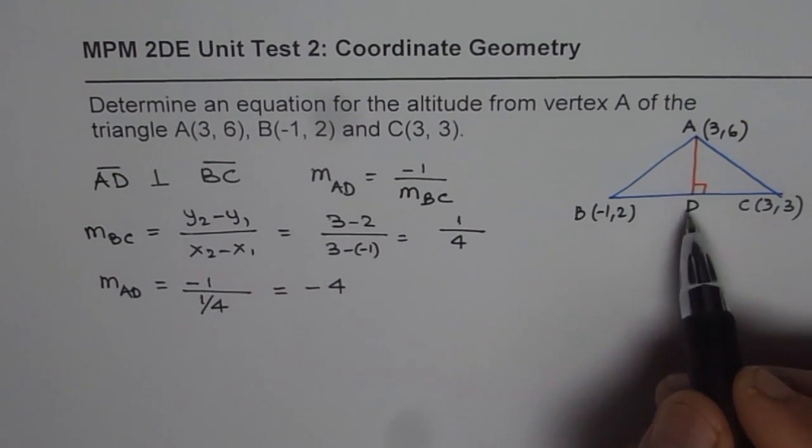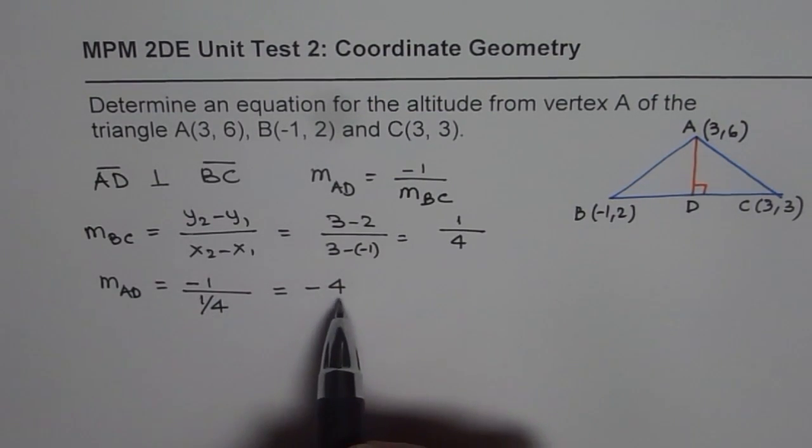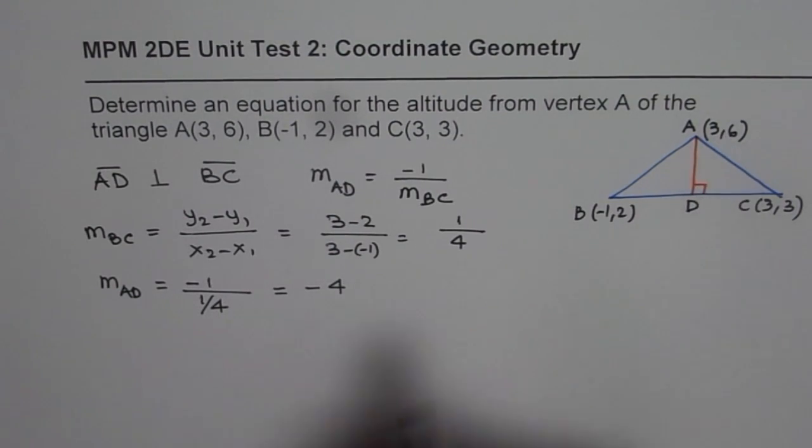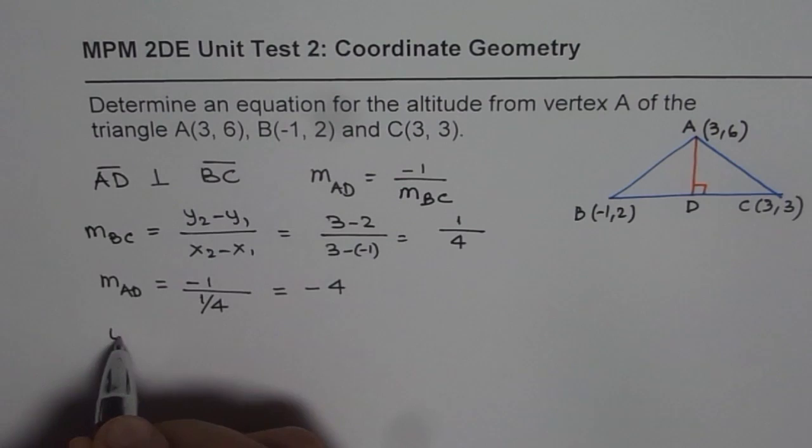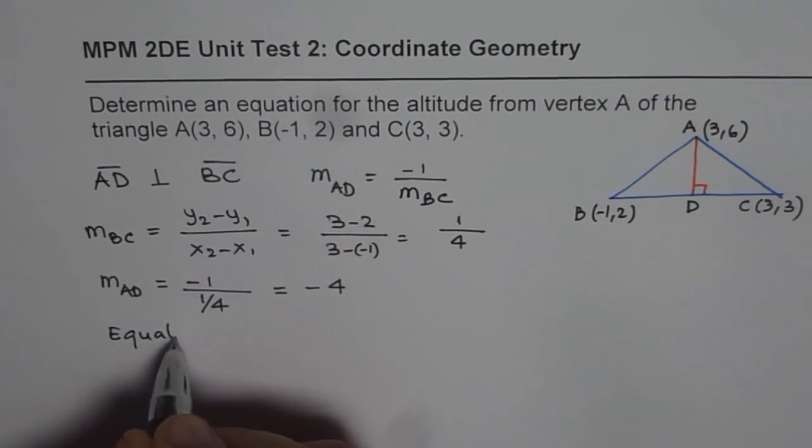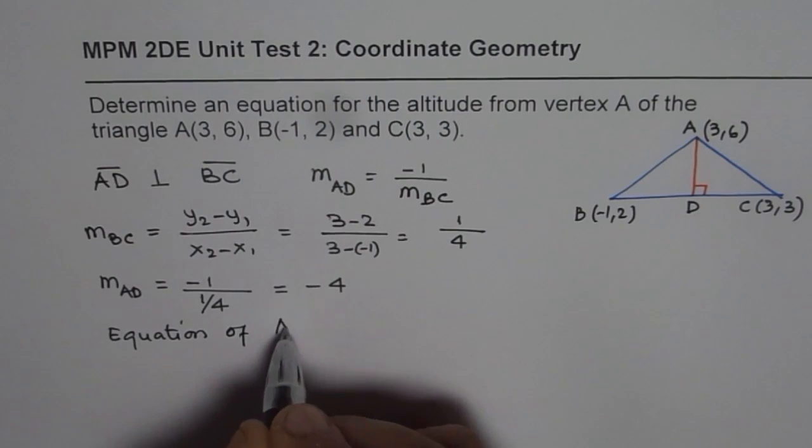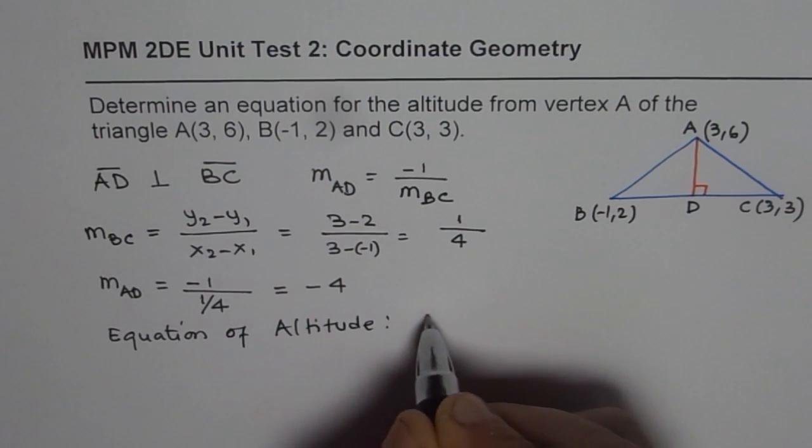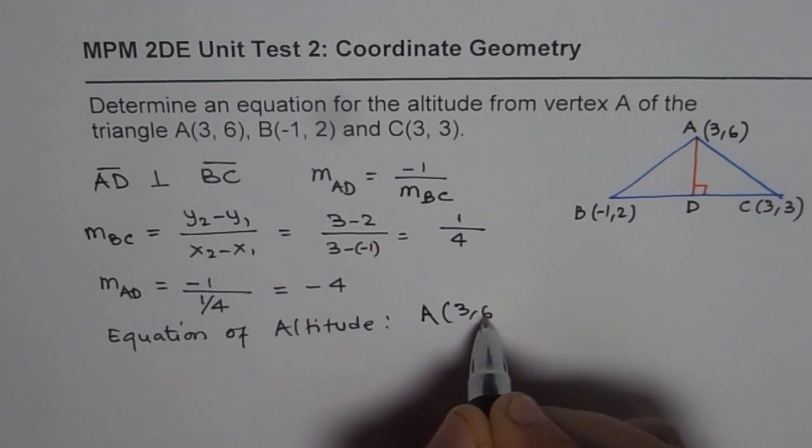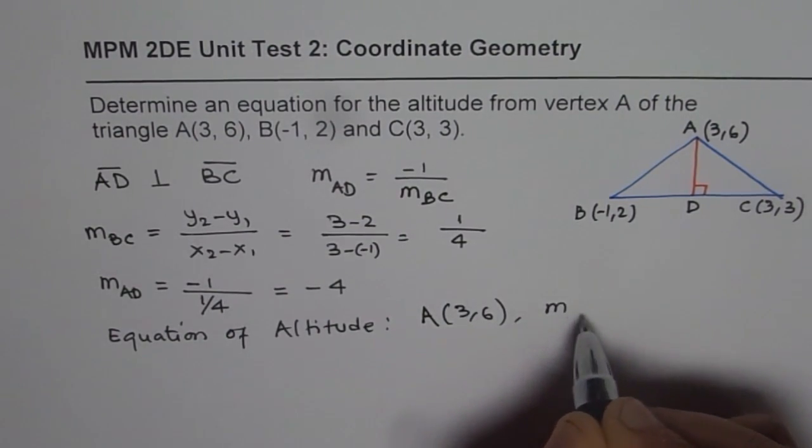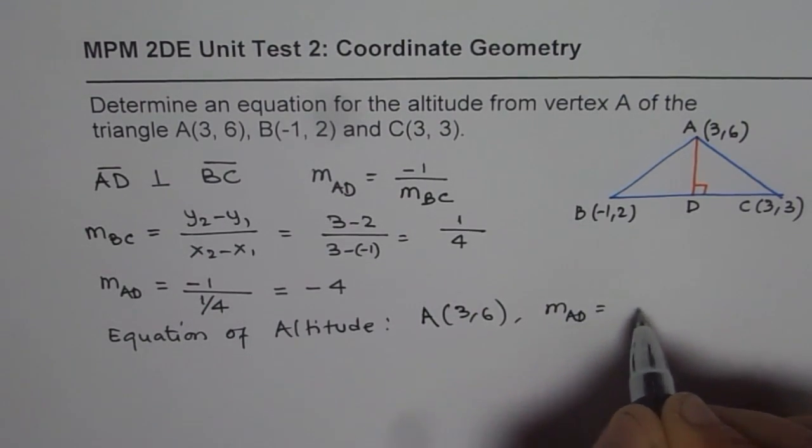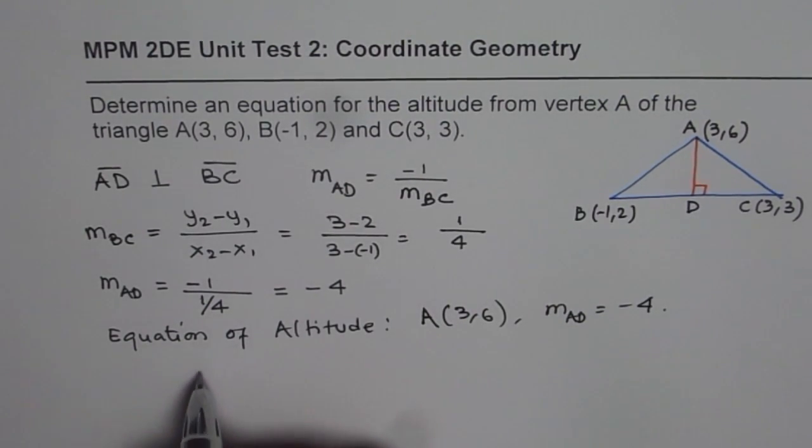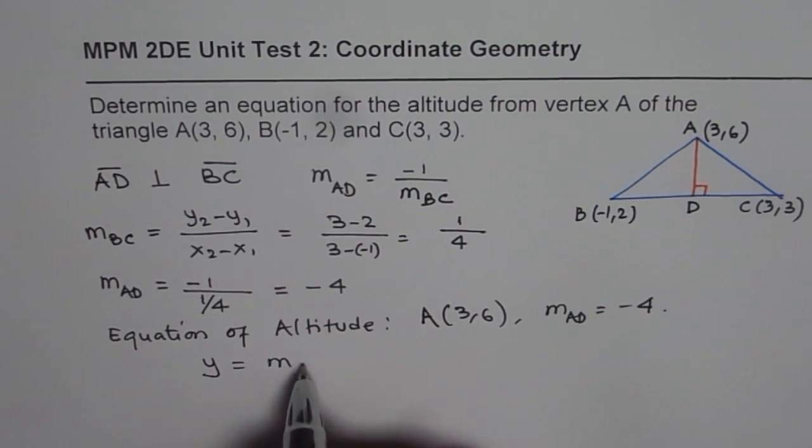Once we know the slope, we can find the equation using one of the points. So now the equation of altitude: we are considering the point A, which is (3, 6), and slope M of the altitude AD is -4. So we can write it like y = mx + b. This could be the equation of the line.